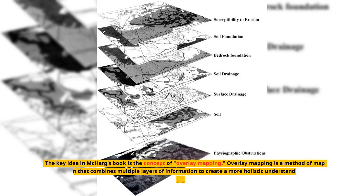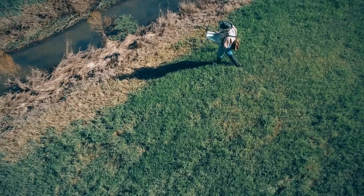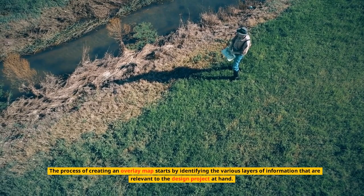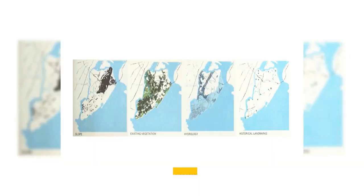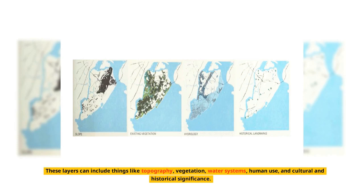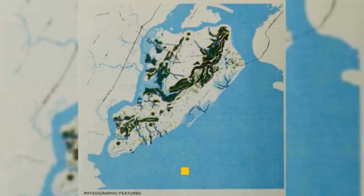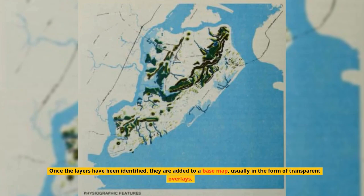The key idea in McHarg's book is the concept of overlay mapping. Overlay mapping is a method of map creation that combines multiple layers of information to create a more holistic understanding of a particular place. The process of creating an overlay map starts by identifying the various layers of information that are relevant to the design project at hand. These layers can include things like topography, vegetation, water systems, human use, and cultural and historical significance. Once the layers have been identified, they are added to a base map, usually in the form of transparent overlays.